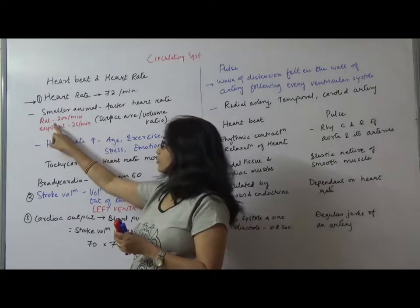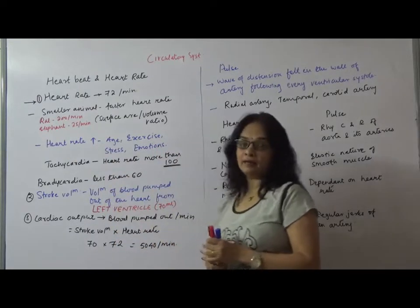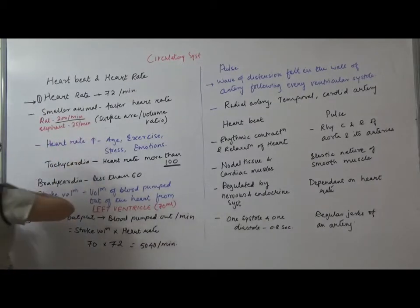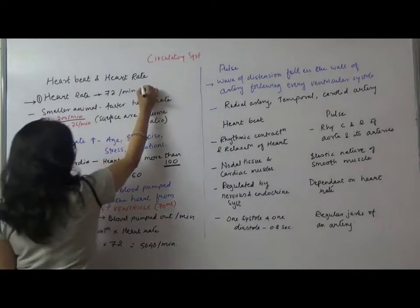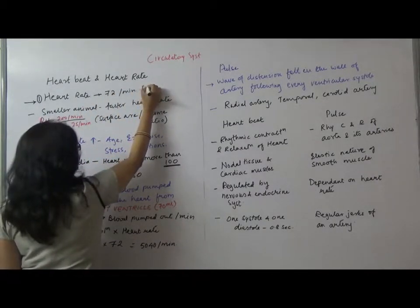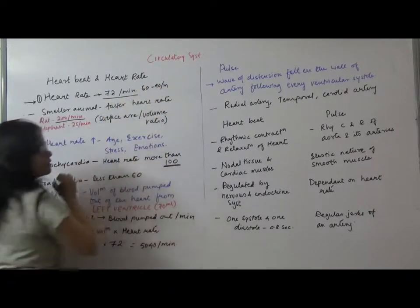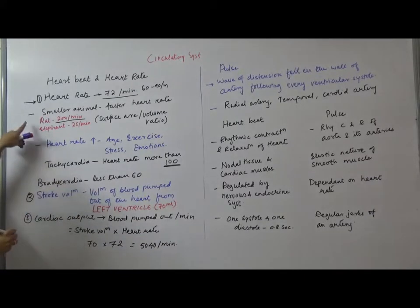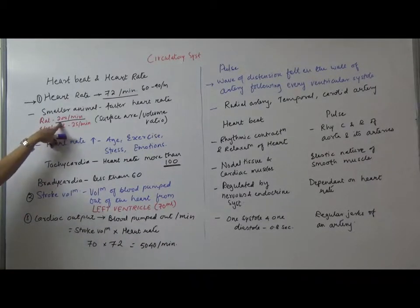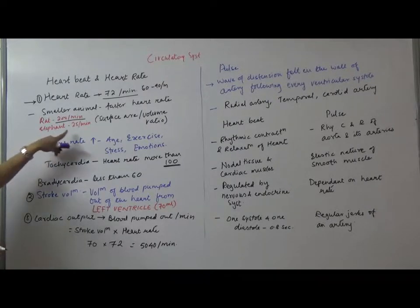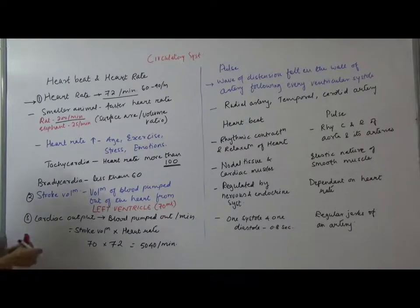Smaller animals like rat have 200 per minute heart rate. Our heart rate can normally range from 60 to 90 beats per minute, but on average, generally we say it is 72 per minute. In case of rat, it is 200 per minute as it is a smaller animal. If you compare rat and elephant, elephant is just having 25 per minute because of their surface area and volume ratio.